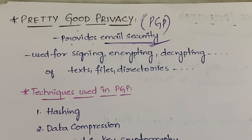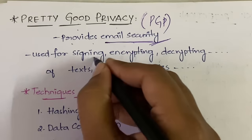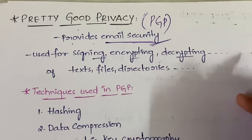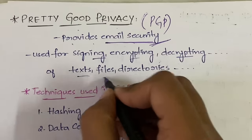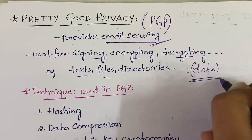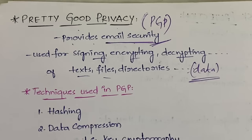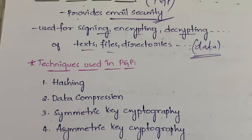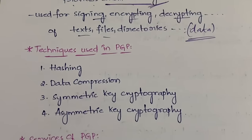PGP is used for signing, encrypting, and decrypting text files, directories, and so on. Simply put, it secures data in emails. This is the main use of PGP.